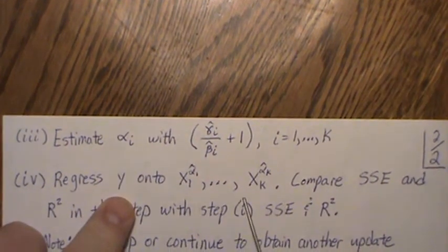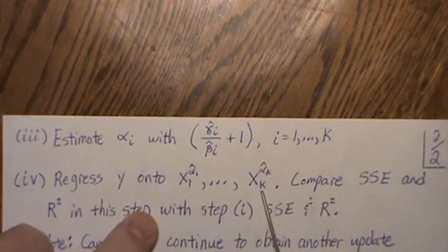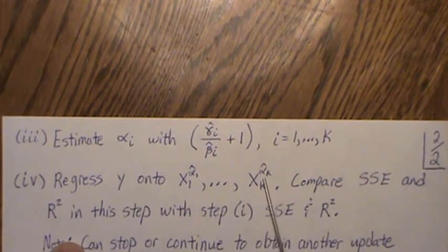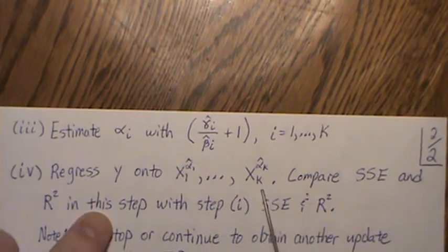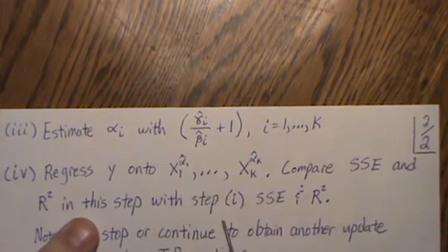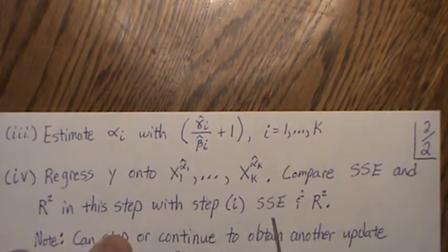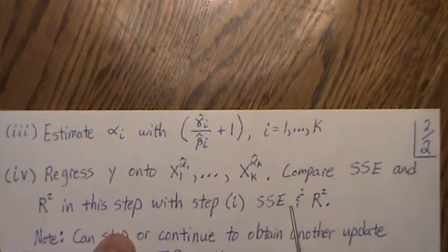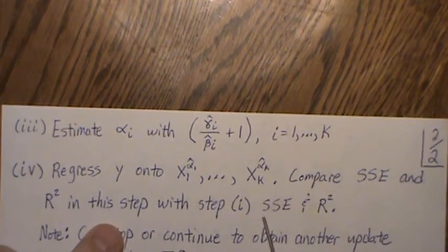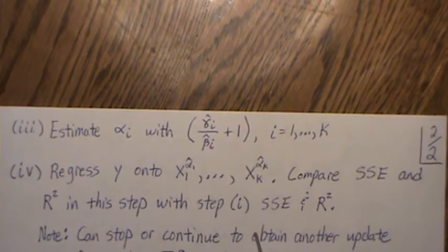And that's what we do. So we estimate the alphas with this. Next we regress y onto the X's with the power transformation, the alphas. And then we compare the sum of squared error and R-squared in this step with the step in one, where there were no power transformation, and we just note the improvement.